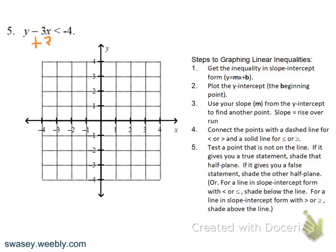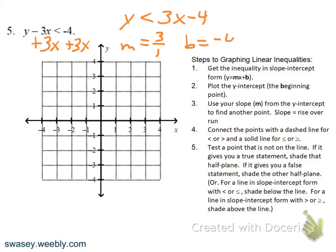This one is not in slope-intercept form, so we must first get y by itself. Now we have y is less than 3x minus 4. Our slope is three over one and the y-intercept is negative four. Put a point at negative four on the y-axis, then go up three to the right one — positive slope, so we're going uphill left to right. This will be a dashed line. Since it's less than in slope-intercept, we shade below the line.